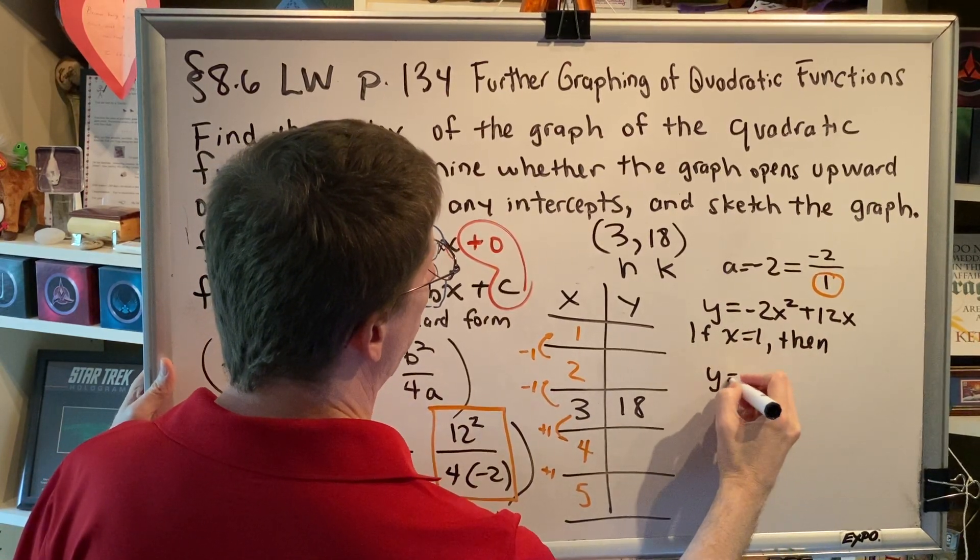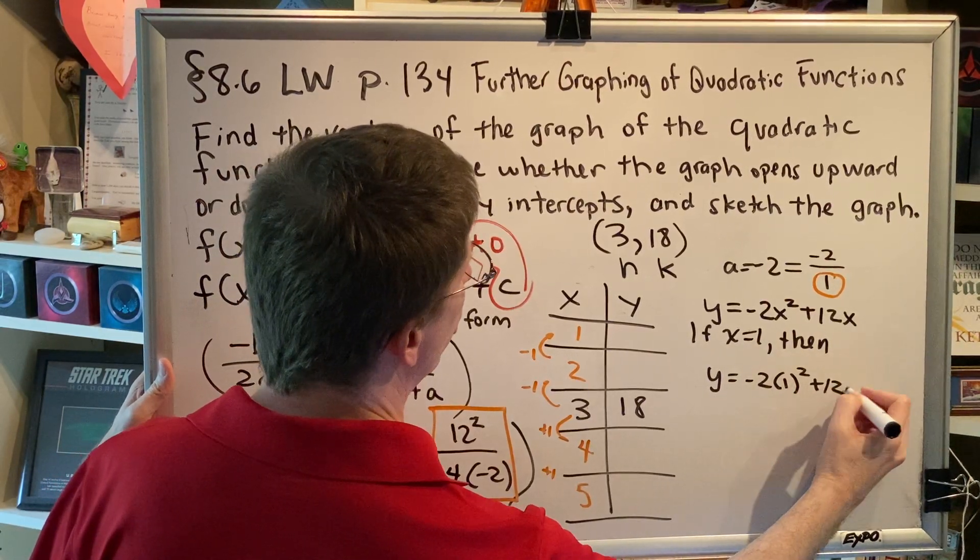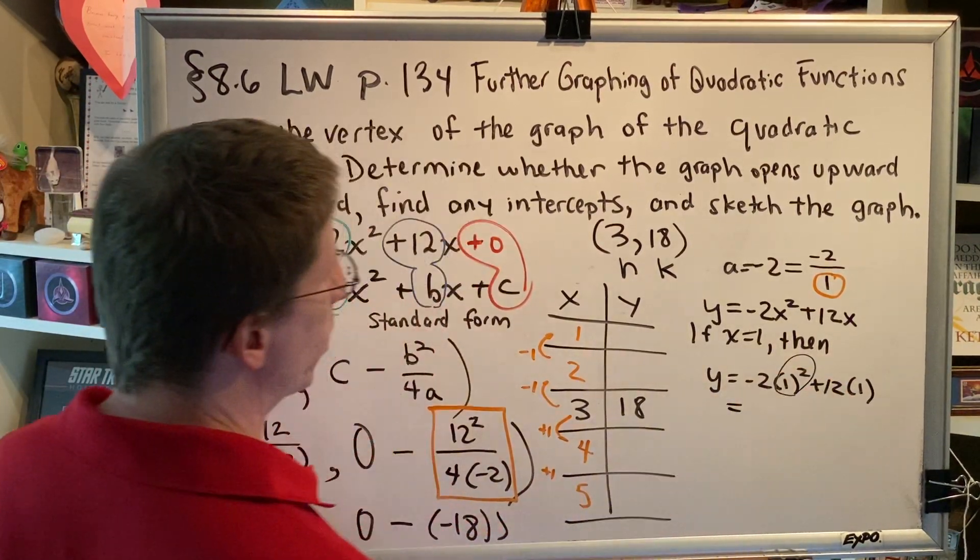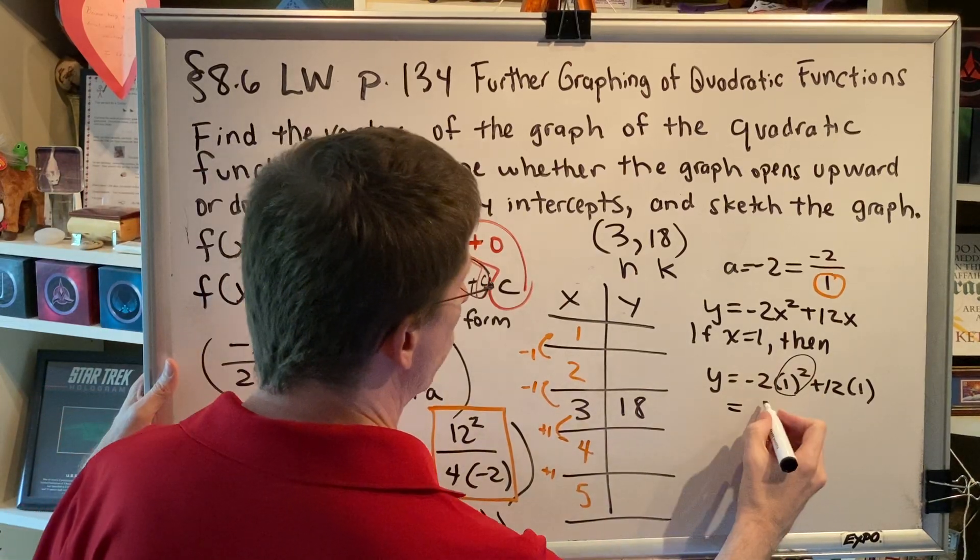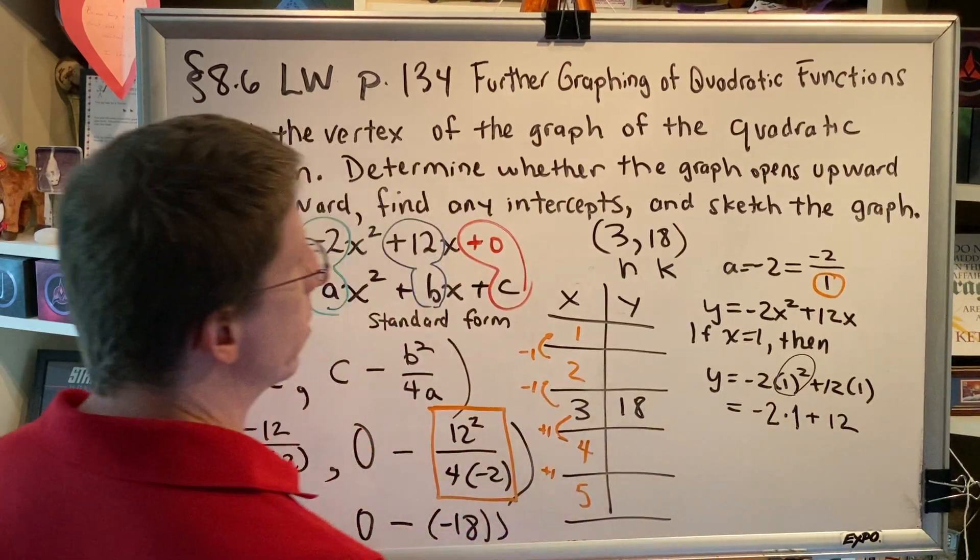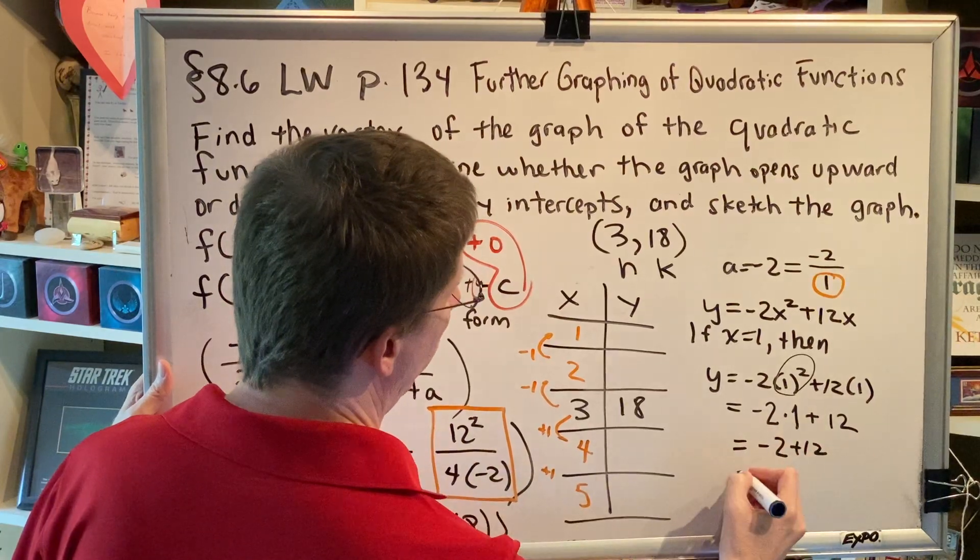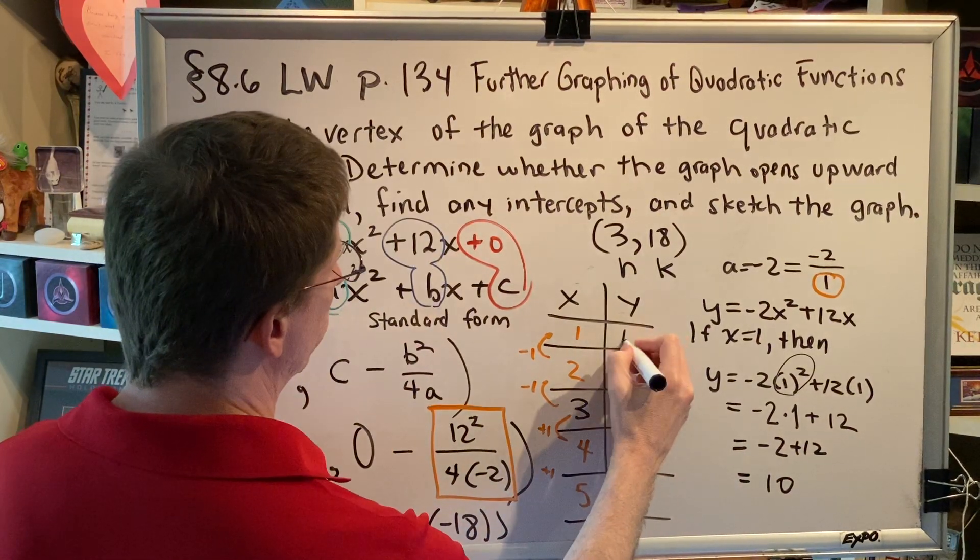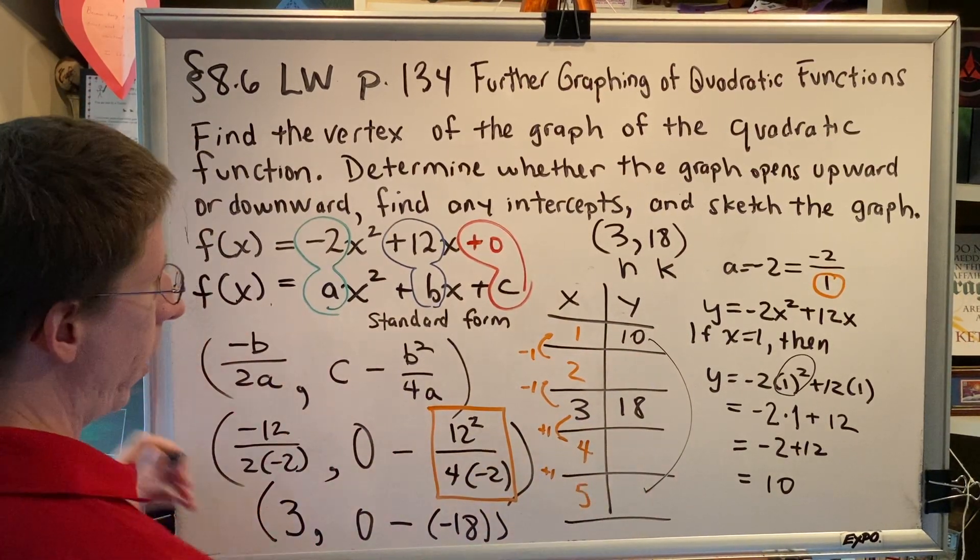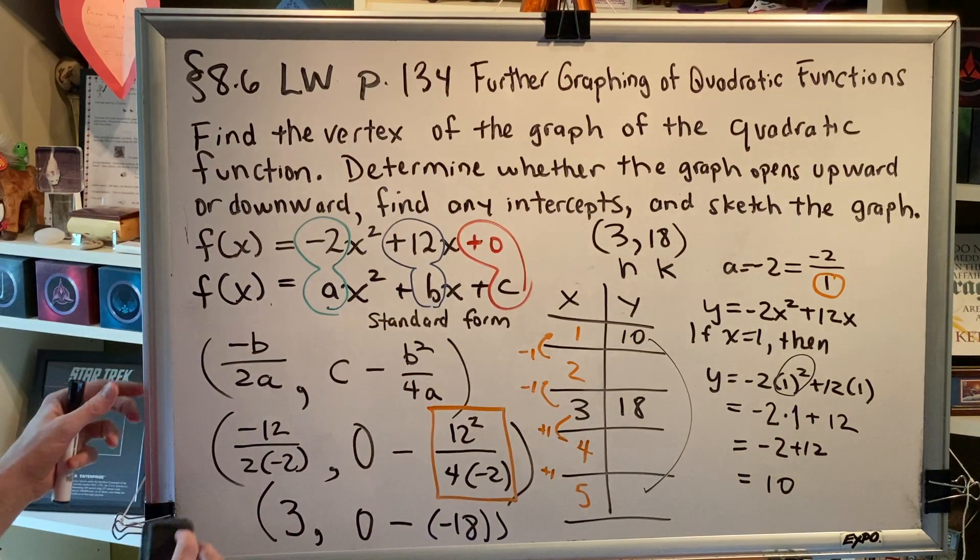Let's start with x equals 1. So, we get y = -2(1)² + 12(1). Following order of operations, we do exponents first. 1 squared is 1. So, we get -2 times 1 plus 12 because anything times 1 is itself. Multiplication is next. So, I get -2 + 12. And then, finally, the addition and I get 10. Now, remember, parabolas have symmetry. So, we're expecting that when we plug in 5 for x, we're going to get the same value of 10. So, let's do that one next.